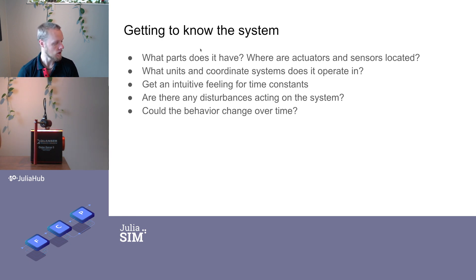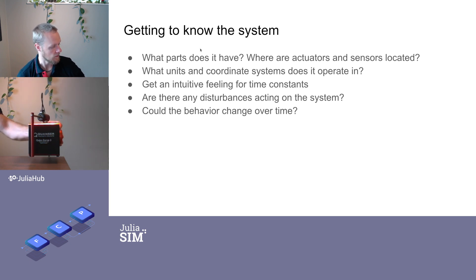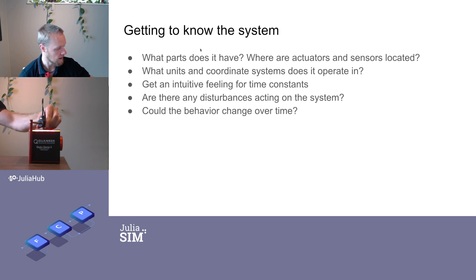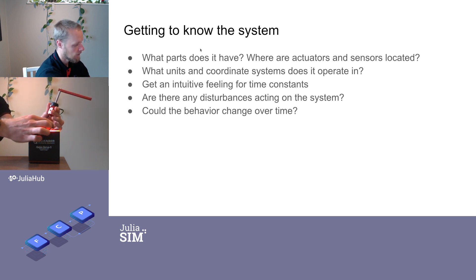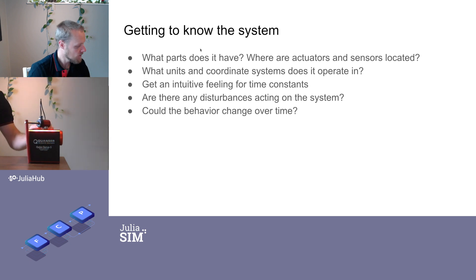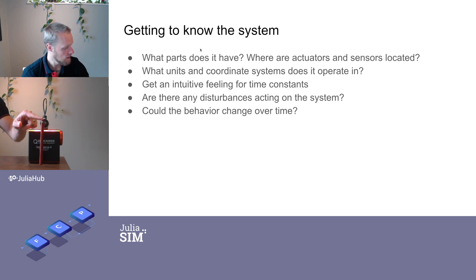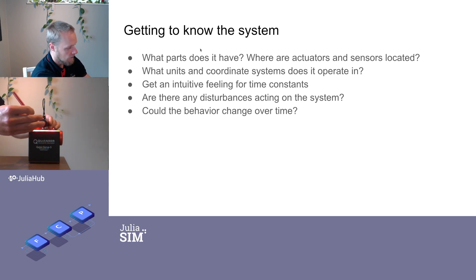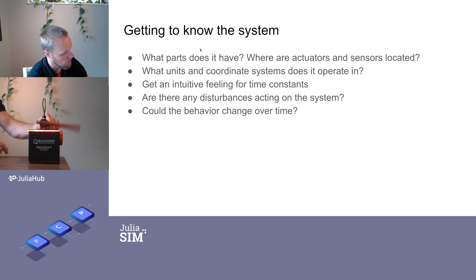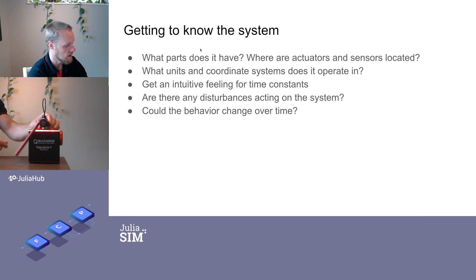What parts does it have? It obviously has the base, which is quite heavy. It has a pendulum attached with a magnetic coupling, so we can actually switch the pendulum out and attach an inertia disc instead, which we'll use in one of our examples. There's a cable that goes to the rotary encoder that measures the angle of the pendulum. The pendulum itself is fairly heavy — it's machined metal — and it rotates with very little resistance thanks to ball bearings, so the pendulum is free to oscillate around its pivot point, and the arm is also free to oscillate.